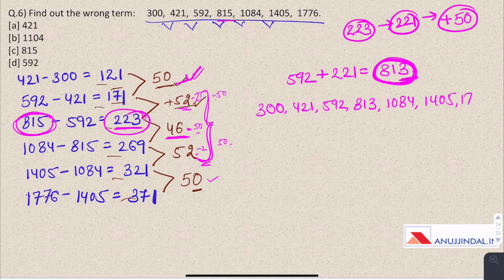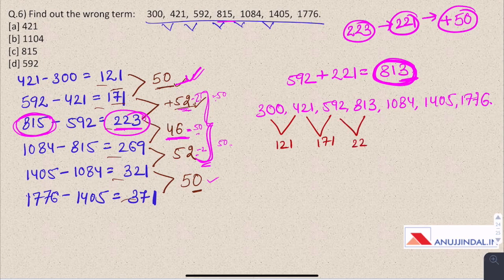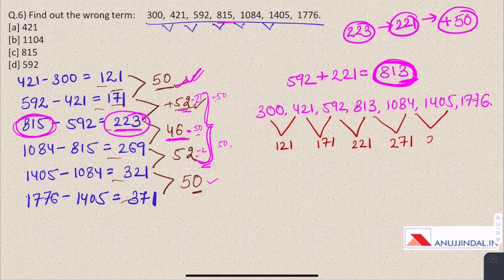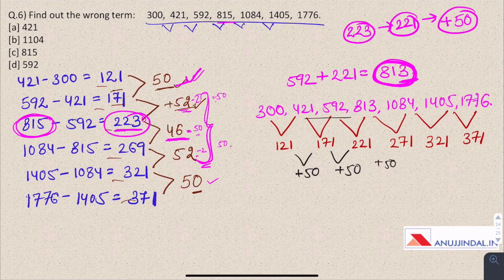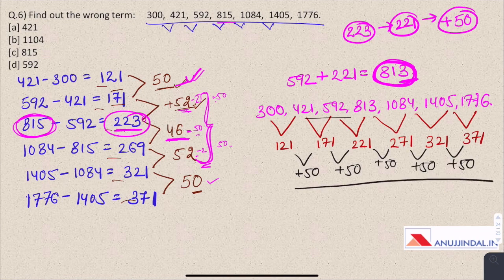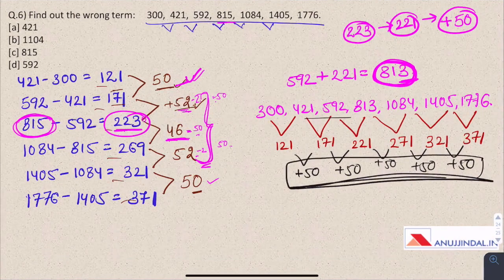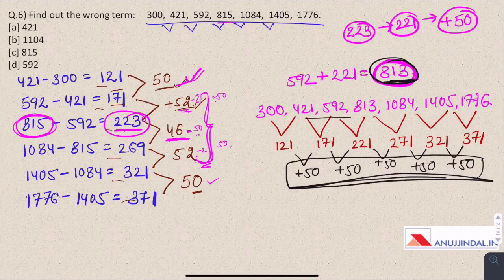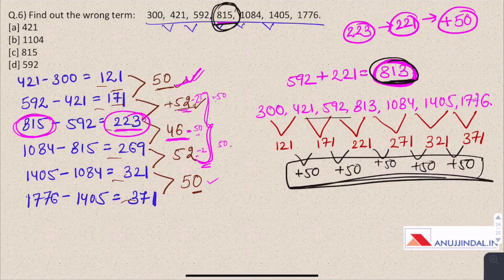And let us see the new series if it satisfies the given condition: 300, 421, 592, 813, 1084, 1405, 1776. Here it is 121, 171, 221, 271, 321, and 371. And after observing you will see that difference in these numbers is increasing by plus 50. So difference here is plus 50 in all the terms. So we could say that this term which should be 813 is given as 815 in the question and it is the wrong term in the question.